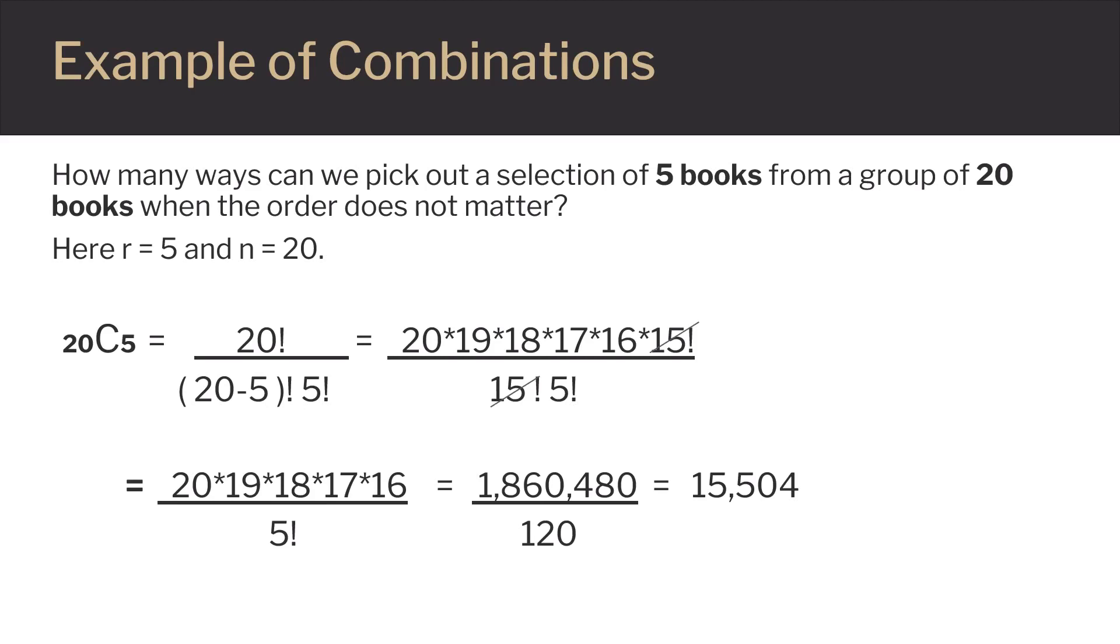The next step is to reduce things a bit to make it easier. On the top we have 20 factorial and on the bottom there is a 15 factorial. It would be great if we could simplify those two and it turns out we can. We can rewrite 20 factorial as 20 times 19 times 18 times 17 times 16 and we could keep going all the way to 1. But all the numbers from 15 to 1 multiplied together is 15 factorial.